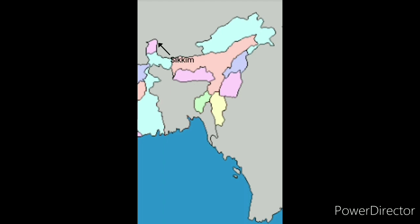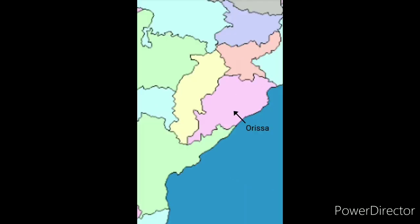Here at the top you can see a small state named Sikkim and its capital is Gangtok. Coming towards the south we have Odisha on the eastern coast of India and its capital is Bhubaneswar. Then we have Chhattisgarh, which was also a part of Madhya Pradesh earlier, and its capital is Raipur.